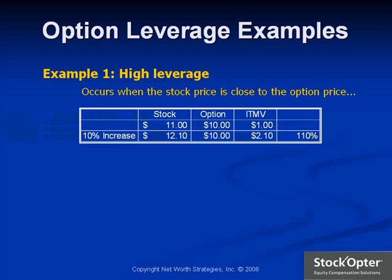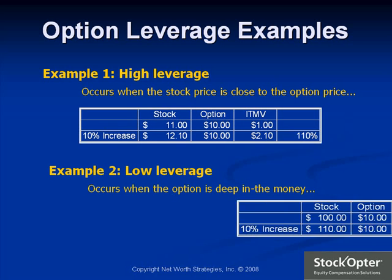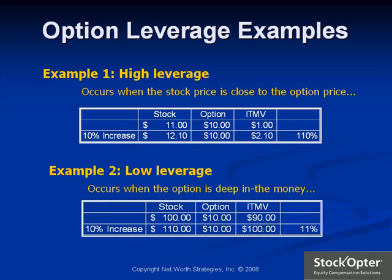Conversely, low leverage occurs when the option is deep in the money. For example, if the current stock price is $100 on the same option of $10 and goes up by 10% to $110, the in-the-money value leverage goes up by only 11% from $90 to $100. Thus, the higher the current stock price is relative to the option price, the less upside leverage or time value remains in the option.